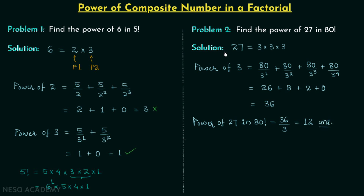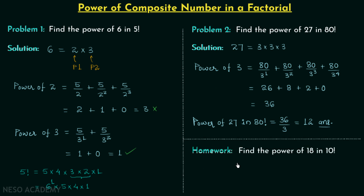I hope this problem is clear. Now for the homework problem: find the power of 18, the composite number, in 10 factorial. Try to solve this problem and once you have your answer, post it in the comment section.